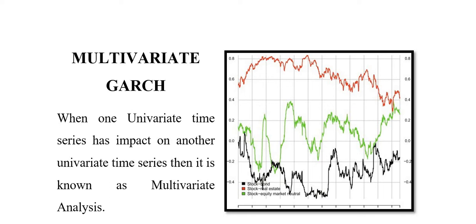We have learned about univariate analysis, where 'uni' means one — that is, we study how to forecast the volatility of a single variable with the help of ARCH and GARCH models. We studied that there are different kinds of GARCH models such as standard GARCH, exponential GARCH, GJR-GARCH, etc. In univariate analysis, today's value depends upon time — it depends either on its own lag or on the lag of the error term, and with the help of previous lags we can predict future price or future volatility.